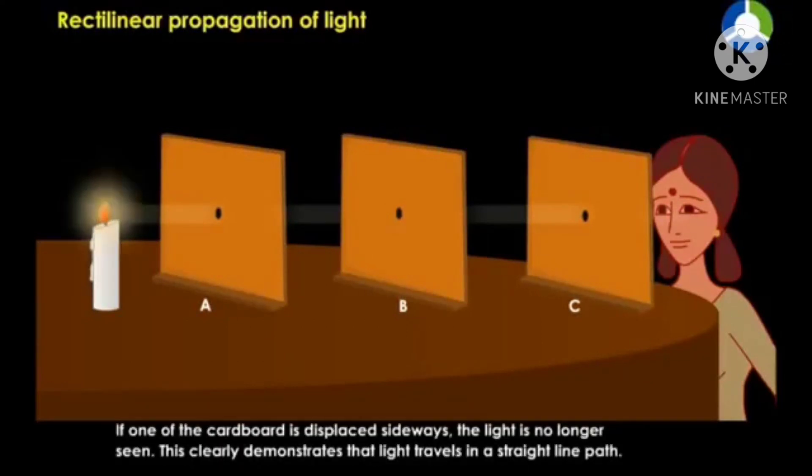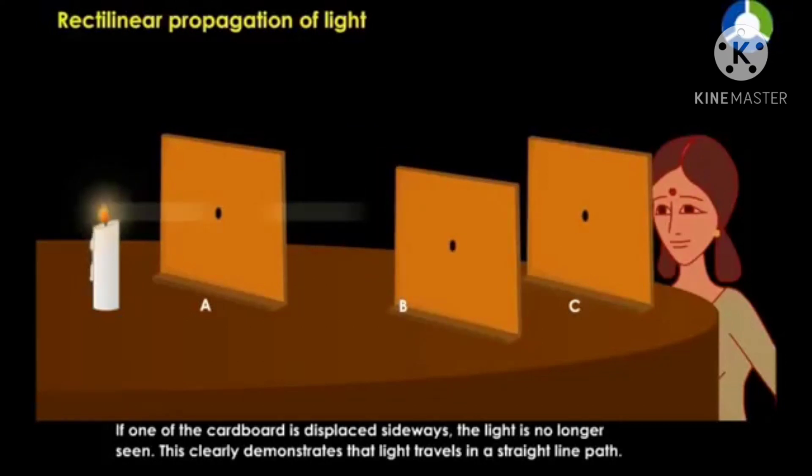If one of the cardboards is displaced sideways, the light is no longer seen. This clearly demonstrates that light travels in a straight line path.